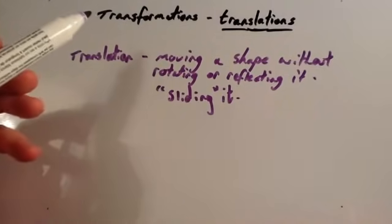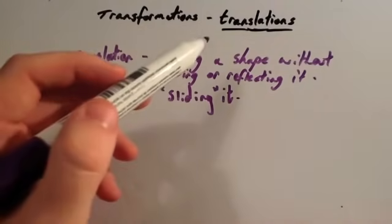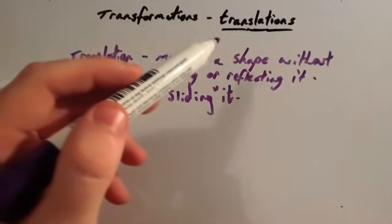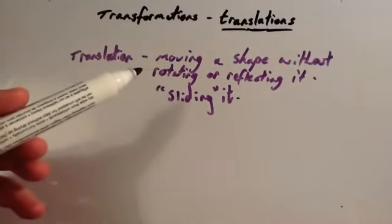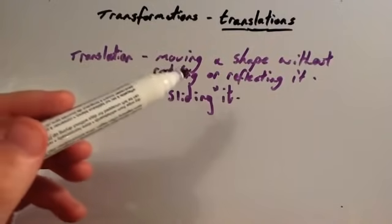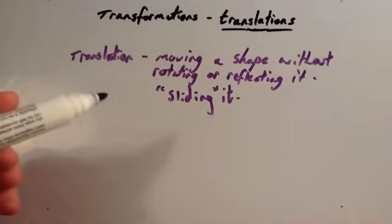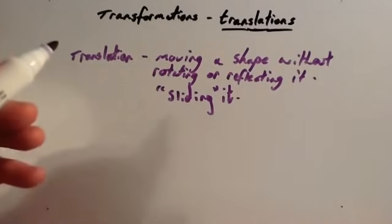Okay, we're now going to look at one of the types of transformations. And this type of transformation is called a translation. Let's look at a definition of a translation. A translation is moving a shape without rotating or reflecting it. Some people describe it as sliding an object or sliding a shape.